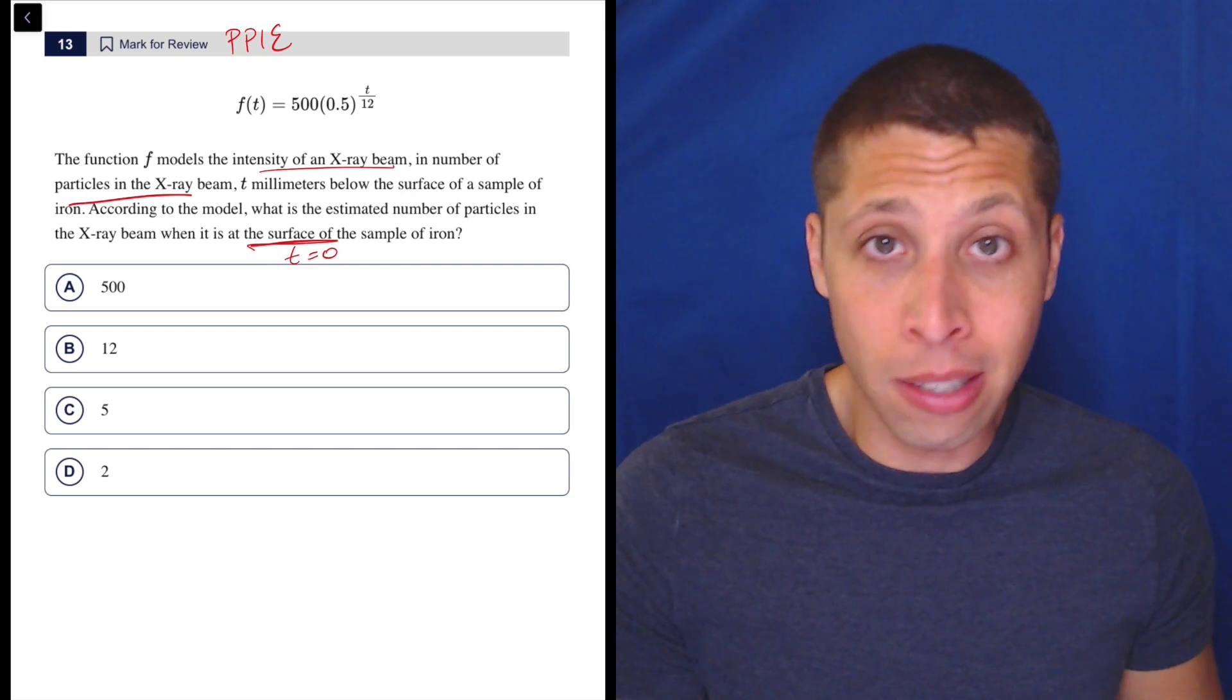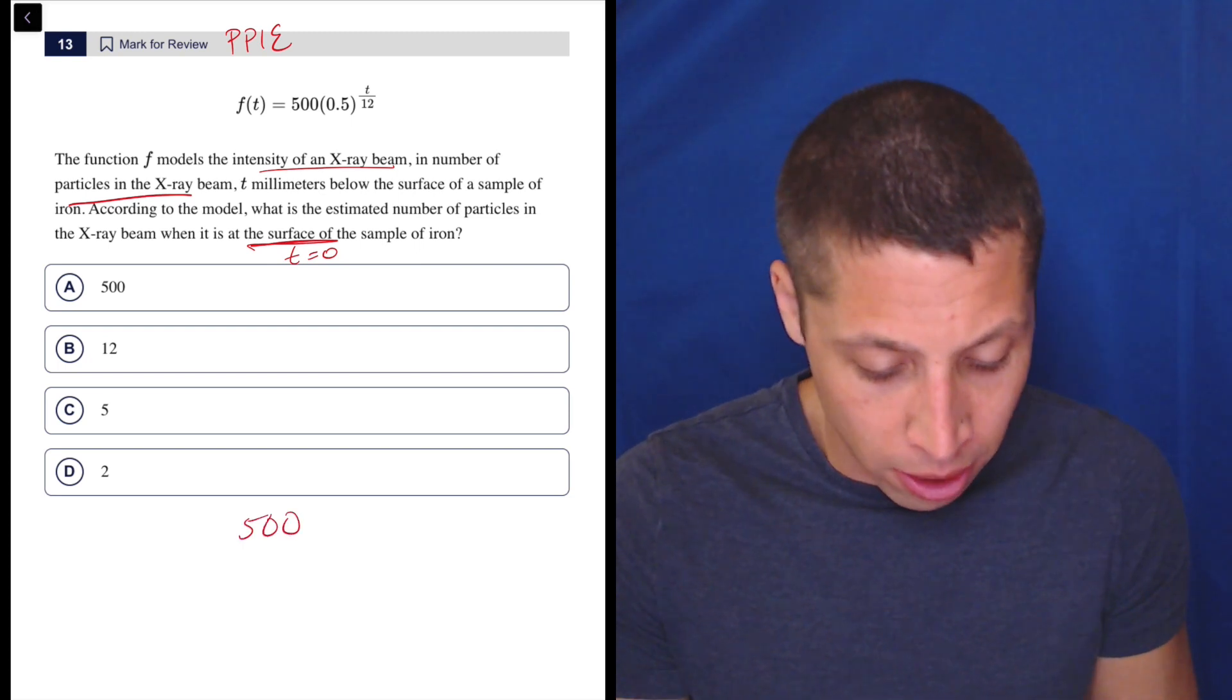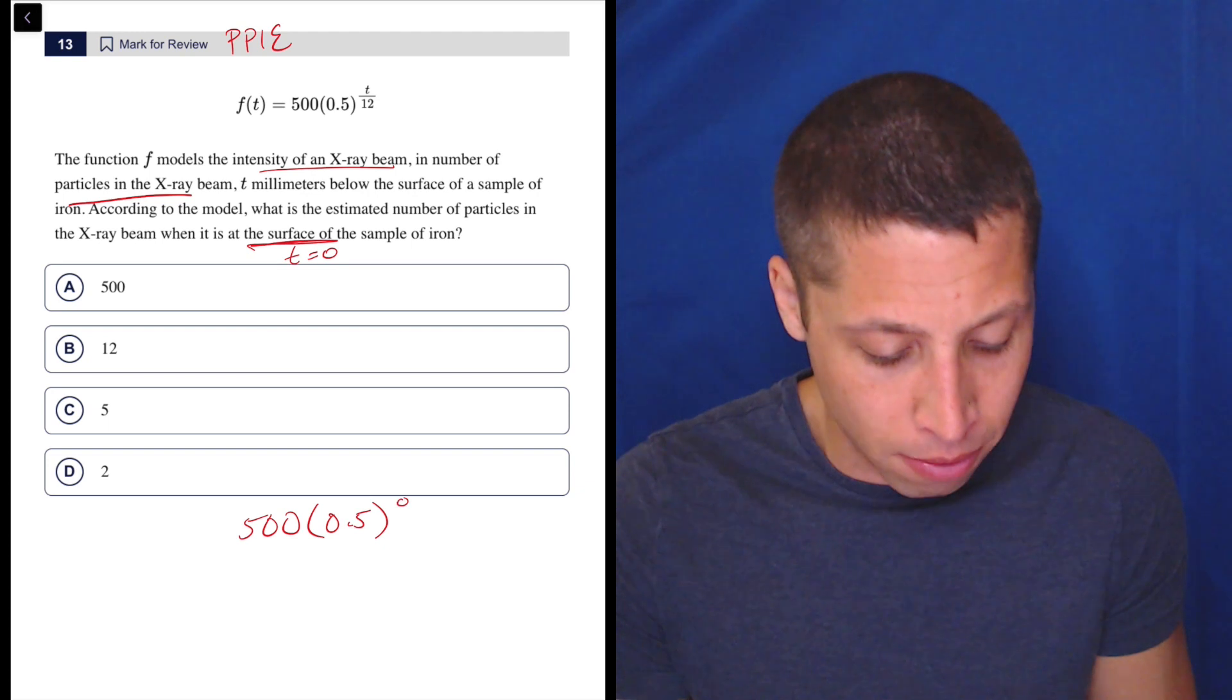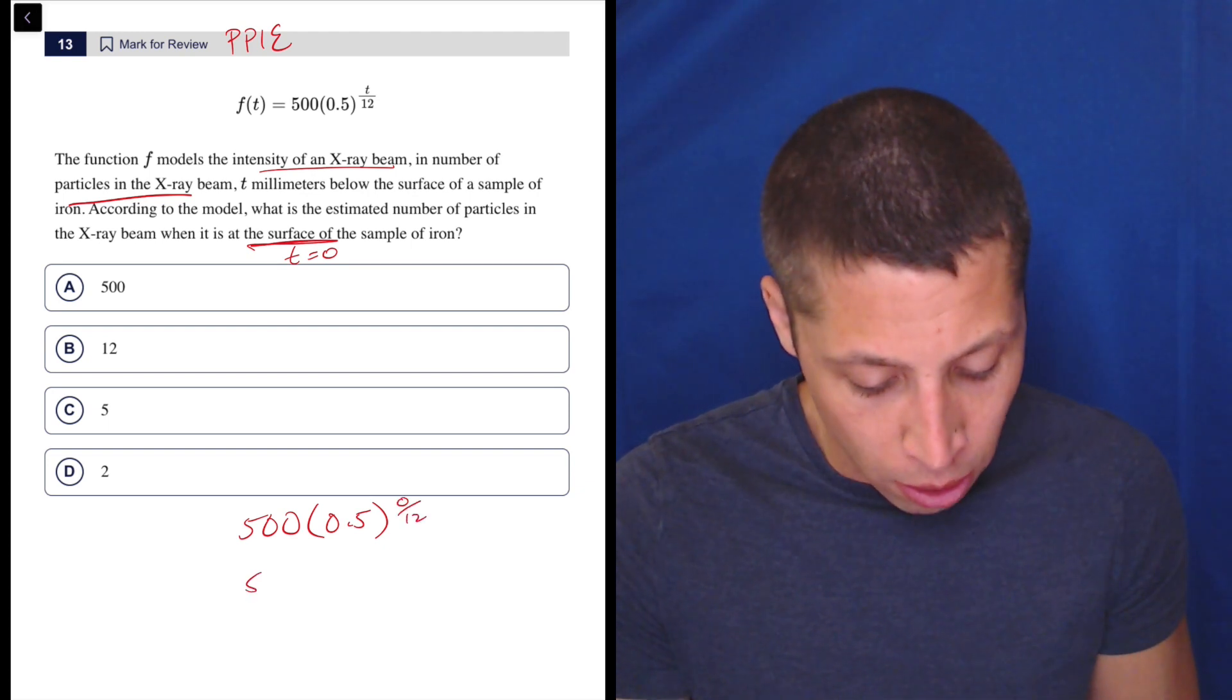So we're just plugging in zero for t, right? So if we did that, we would have 500 times 0.5 to the 0 over 12.